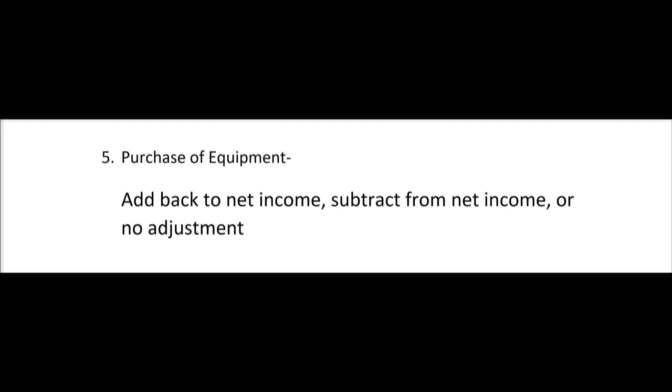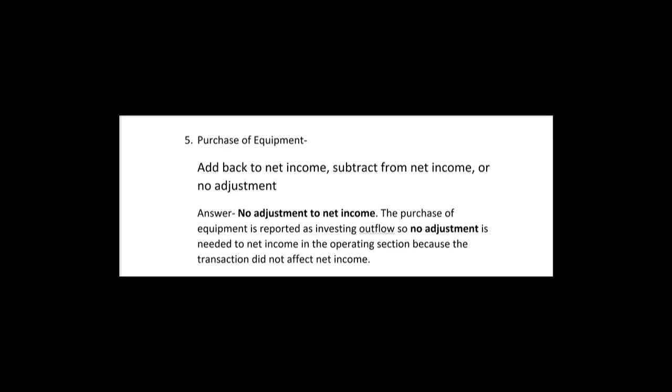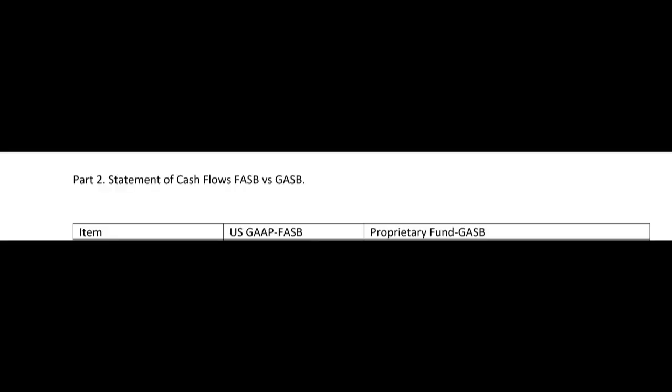Number five: purchase of equipment — add back, subtract, or no adjustment under the indirect method? There's no adjustment to net income because purchasing equipment doesn't impact net income. Starting with net income, it has not been affected by the equipment purchase. On the cash flow statement, purchase of equipment is reported as an investing outflow, not an operating outflow. No adjustment is needed in the operating section because the transaction didn't affect net income and doesn't affect operating cash flows.